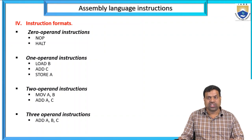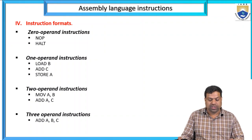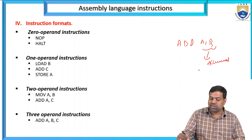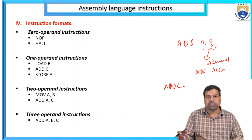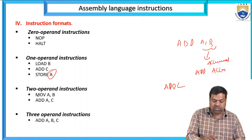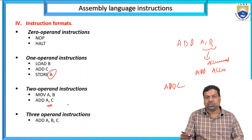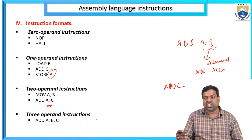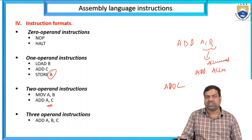Operation field specifies the operation to be performed, like addition (ADD) or subtraction (SUB). Address field contains the location of the operand — register or memory location. Mode field specifies how the operand is to be found. Instruction formats: zero operand (no operands, e.g., NOP or HALT), one operand (e.g., LOAD, ADD C), two operands (e.g., ADD A, B or MOVE A, B), and three operands (e.g., ADD A, B, C).